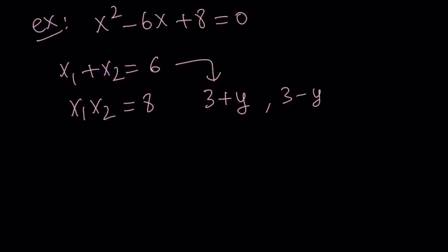Couldn't you go with 4 plus y and 2 minus y? Absolutely. But you wouldn't have that nice symmetry. That's why we want to split the 6 into two pieces. Half of 6 is 3, and 3 plus y and 3 minus y are two numbers whose sum is 6.